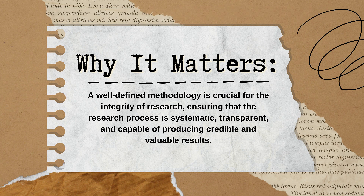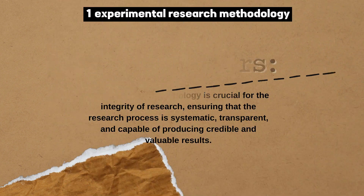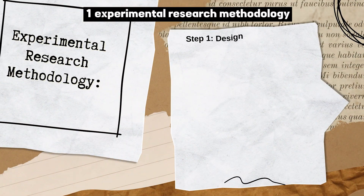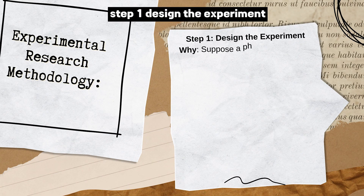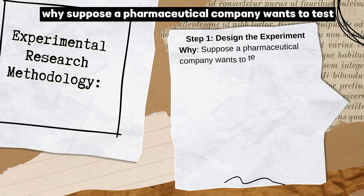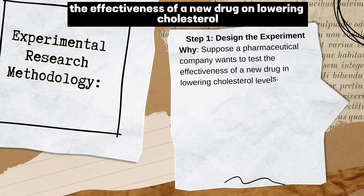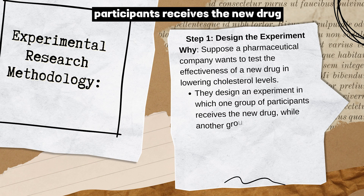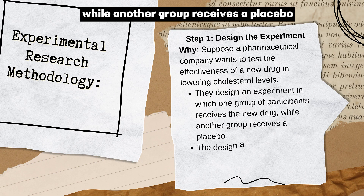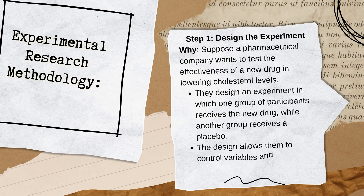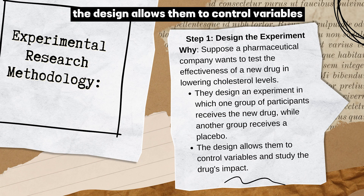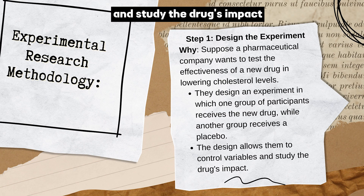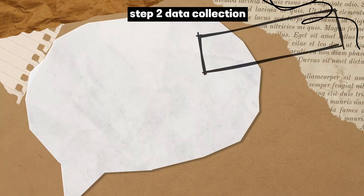Experimental Research Methodology — Step 1: Design the Experiment. Suppose a pharmaceutical company wants to test the effectiveness of a new drug on lowering cholesterol levels. They design an experiment in which one group of participants receives the new drug while another group receives a placebo. This design allows them to control variables and study the drug's impact.